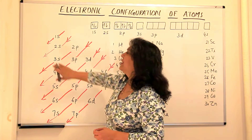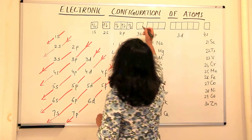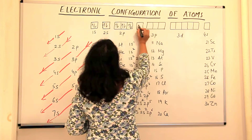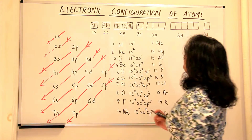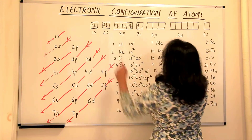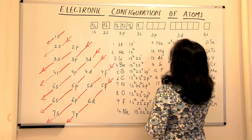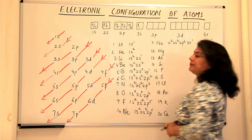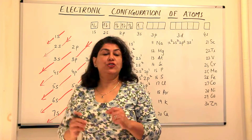The next orbital according to energy is 3s, which has energy greater than 2p. So the 11th electron — the last electron of sodium — goes to 3s. The configuration of sodium would be 1s2, 2s2, 2p6, and 3s1. This is the configuration of sodium.